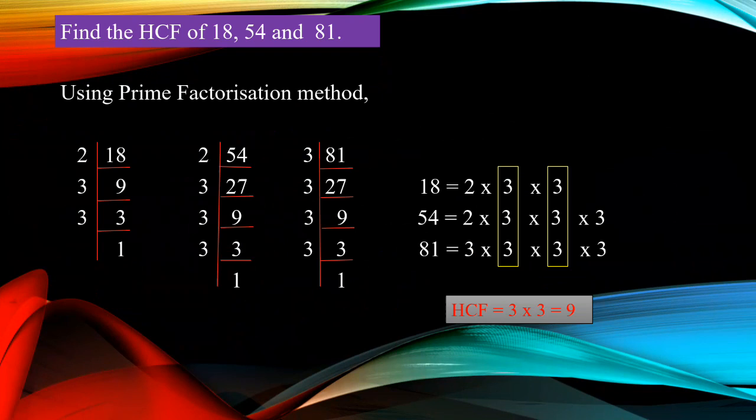First, 18. 18 is an even number, so we can use 2. 18 divided by 2 gives 9 — 9 twos are 18. Then, 9 is an odd number, so we are taking 3. 3 threes are 9. Again, for 3, same 3 — 1 three is 3. So factors of 18: 2 × 3 × 3.